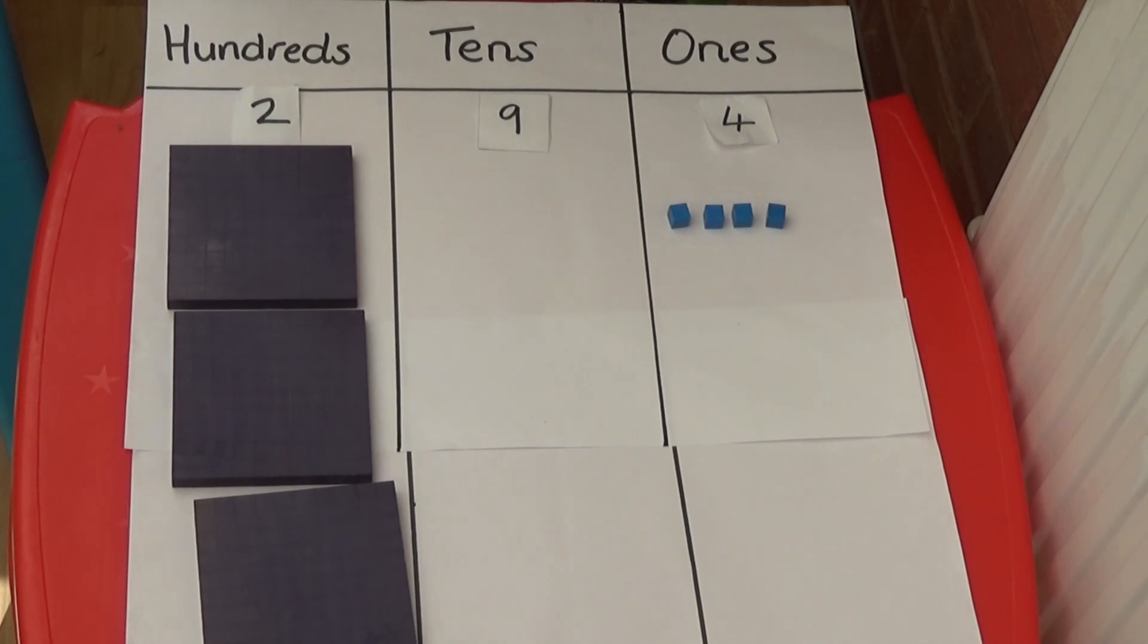We now have 3 hundreds, 0 tens, and 4 ones. So 294 add 10 equals 304.